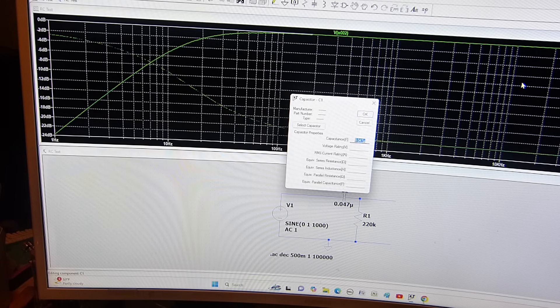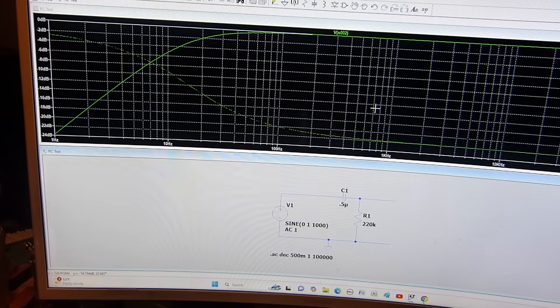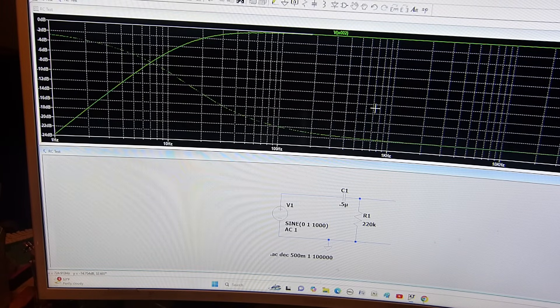I'm going to change it to a 0.5 microfarad - you got to put in the 'u' or it thinks it's farads. Those big capacitors are always better, right? Well, okay, now watch what it does to the curve out here when I simulate it again.